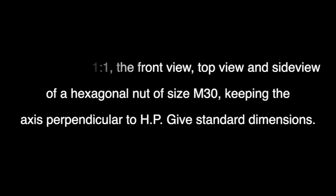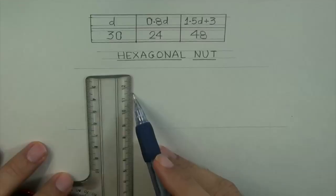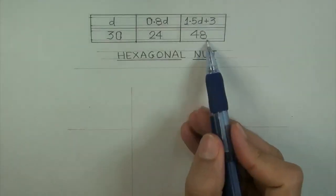So M30 equals to D30. Welcome to technical drawing. Today, I will show you how to draw a hexagonal nut.